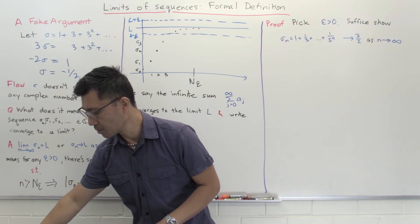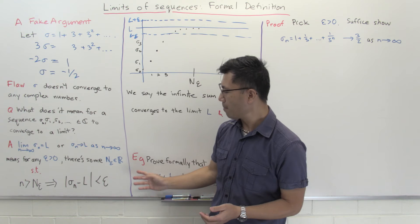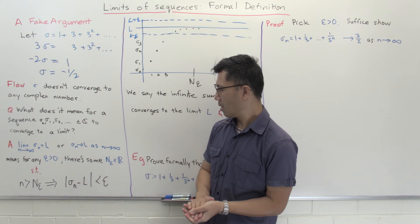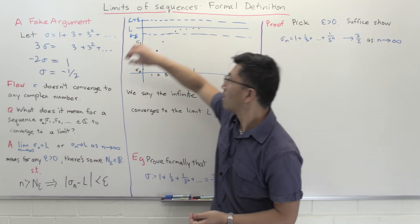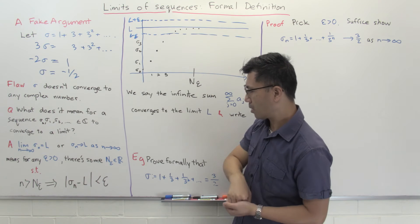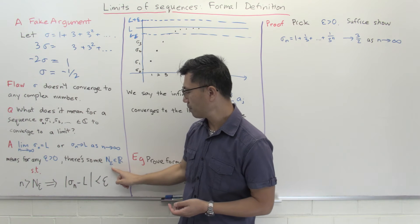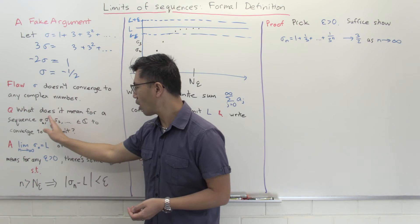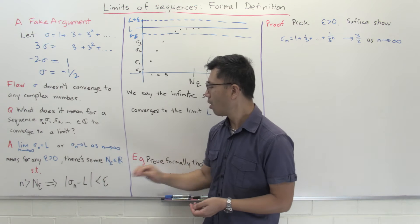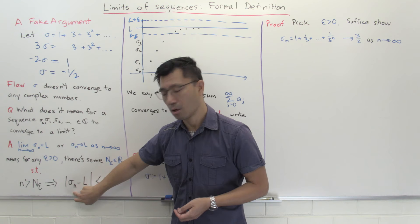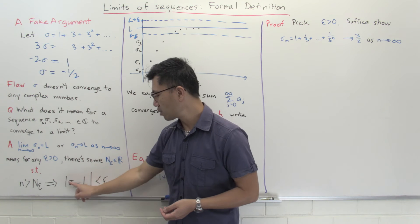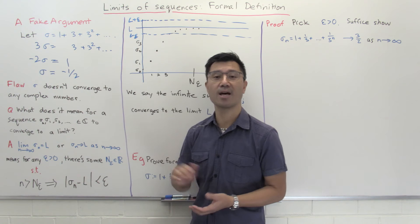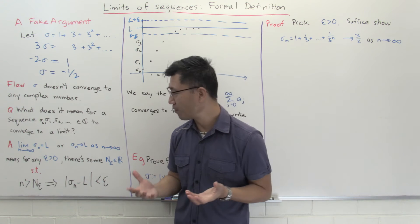This is the formal definition: the limit of σ_n equals L means that given any epsilon greater than zero — a level of closeness to the limit — you can find a wait time N(epsilon) such that for all n greater than N(epsilon), all those sequence values σ_n will be within epsilon of L, in the sense that |σ_n − L| < epsilon. Here we're looking at complex numbers, so we use the modulus. That is the formal definition of a limit.